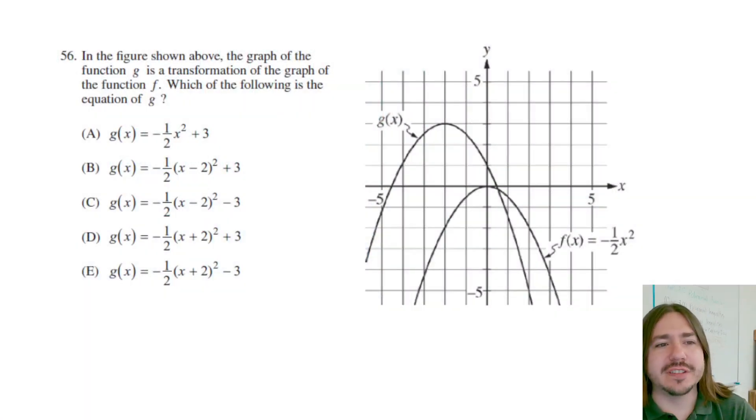Hey y'all, welcome back. Number 56 says, in the figure shown above, the graph of the function G is a transformation of the graph of the function F. Which of the following is the equation for G?